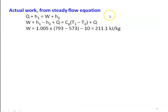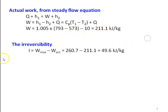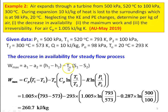For actual work, using the steady flow energy equation for a turbine: Q + H1 = W + H2, so W = H1 − H2 + Q = Cp(T1 − T2) + Q = 1.005×(793 − 573) − 10 = 211.1 kJ/kg. Irreversibility I = W_max − W_actual = 260.7 − 211.1 = 49.6 kJ/kg.